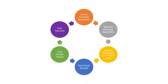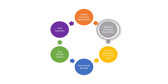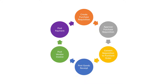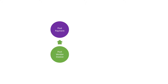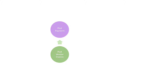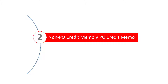Now let's take a look at the Procure-to-Pay process. Note that a non-PO credit memo does not reference a purchase order, so the procurement steps — Create Purchase Requisition, Approve Purchase Requisition, Convert Requisition to Purchase Order, and Post Goods Receipt — are not relevant. Transaction FB65 sits within the Post Vendor Invoice step and is completed by the Accounts Payable Department.